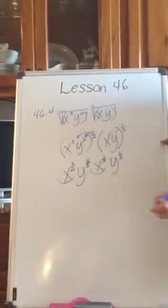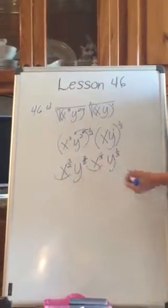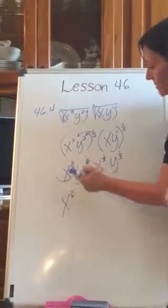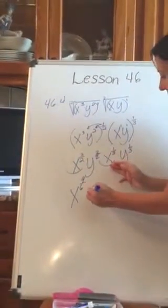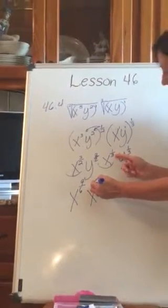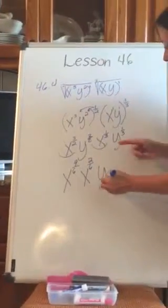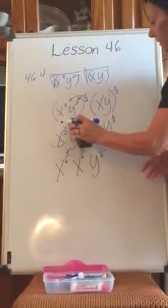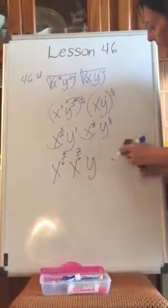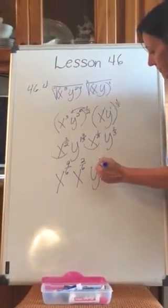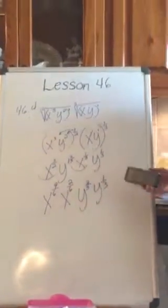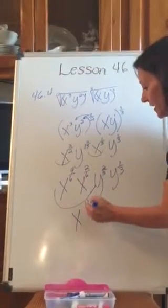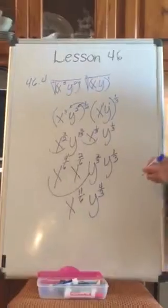Now I look at my x variable. I need a common denominator between 2 and 3, which is 6. So I multiply the numerator 3 by 3 to get 9 sixths, and for the other x, I multiply by 2 over 2 to get 2 sixths. For y, the common denominator is also 6 — 1 over 1 becomes 3 over 3, and 1 third stays as 2 sixths. I now have a common denominator, so I add: 9 plus 2 is 11, giving x to the 11 sixths. Y is 1 plus 1 third: using denominator 3, that's 4 thirds. So the answer is x to the 11 sixths times y to the 4 thirds.